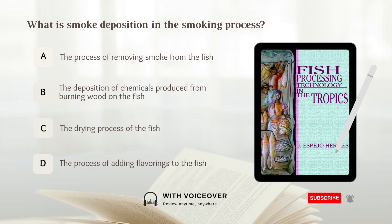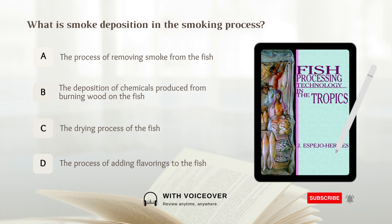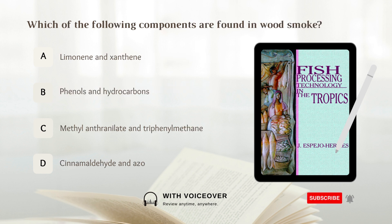What is smoke deposition in the smoking process? A. The process of removing smoke from the fish. B. The deposition of chemicals produced from burning wood on the fish. C. The drying process of the fish. D. The process of adding flavorings to the fish. Answer: B. The deposition of chemicals produced from burning wood on the fish.